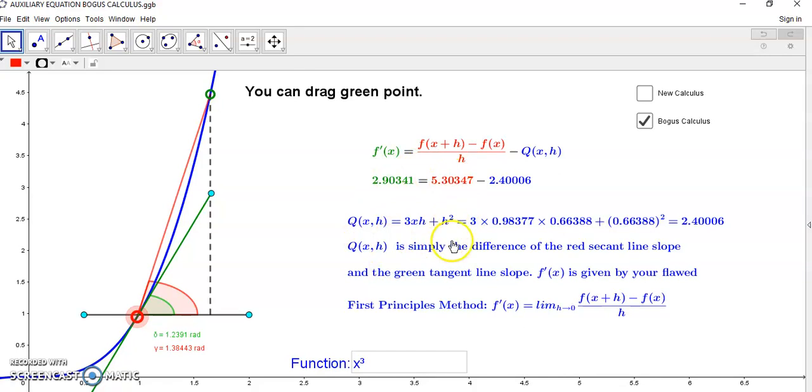This is what I pointed out to mainstream academics, but they don't seem to understand. This here has to be zero in order for you to obtain the actual value of the derivative. If this side has to be the value of the derivative, this point has to coincide with this point here. It has to coincide, and if it doesn't, then this isn't the derivative. This here has to go to zero in order for you to find the derivative.